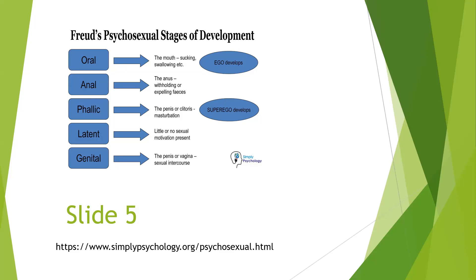Looking at slide 5, the stages Freud proposed are: the oral stage, focused on the mouth — sucking and swallowing — where the ego develops; the anal stage, focused on the anus, withholding or expelling feces; the phallic stage, focused on the penis or clitoris and masturbation; the latent stage, with little or no sexual motivation present; and the genital stage, focused on the penis or vagina and sexual intercourse.